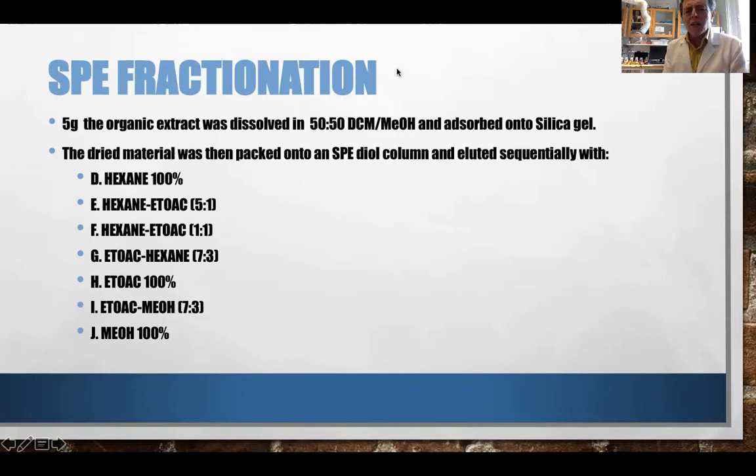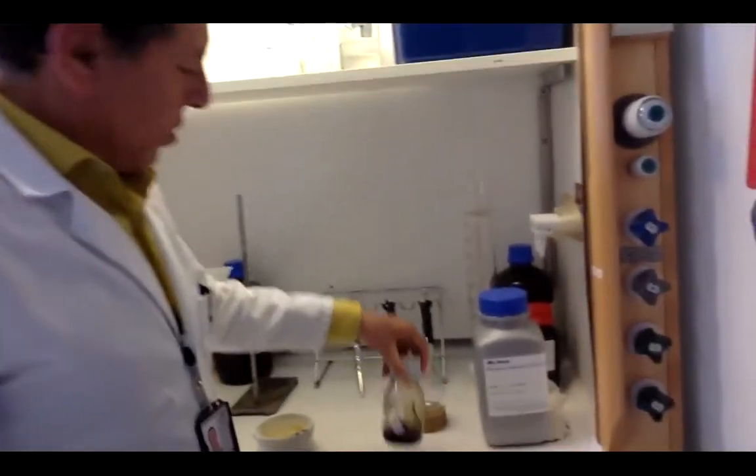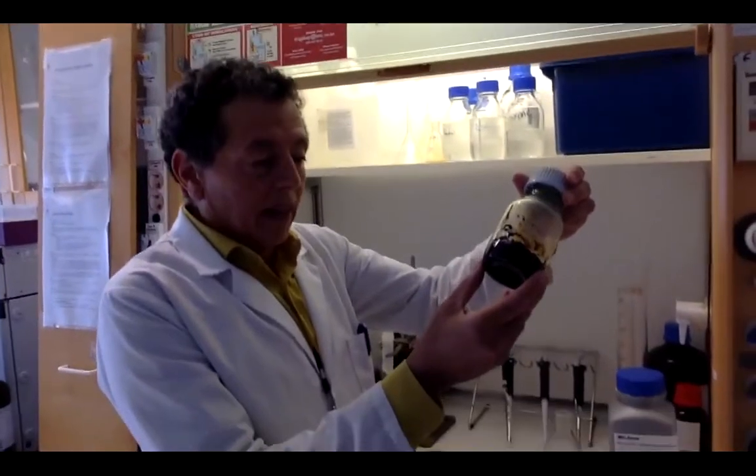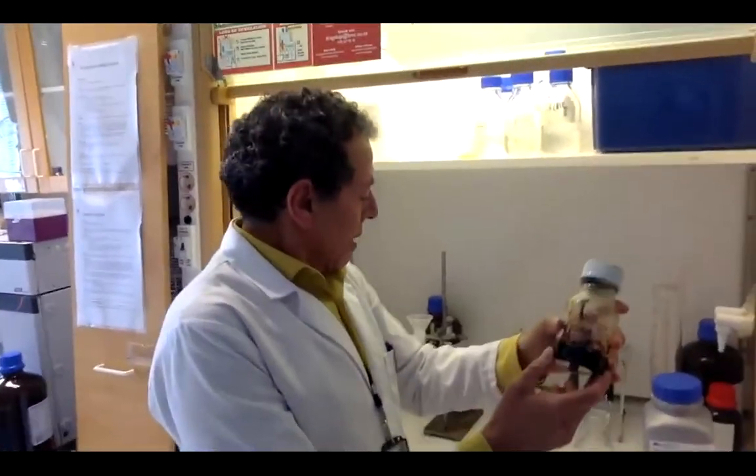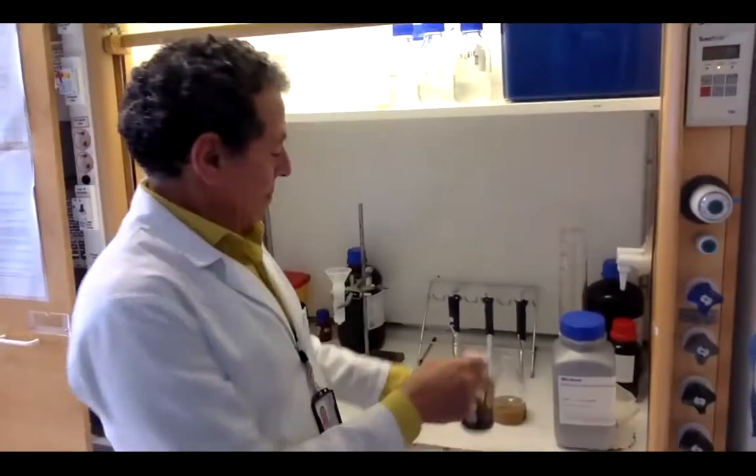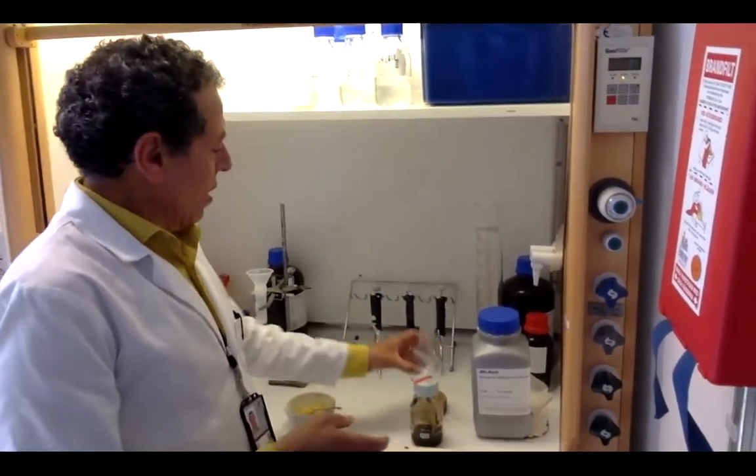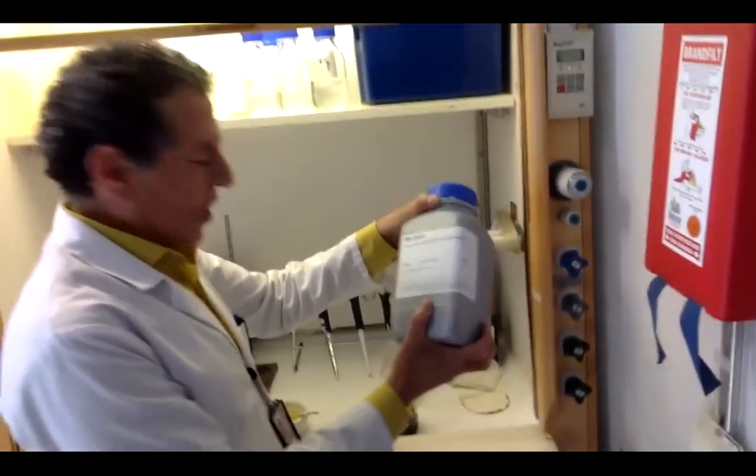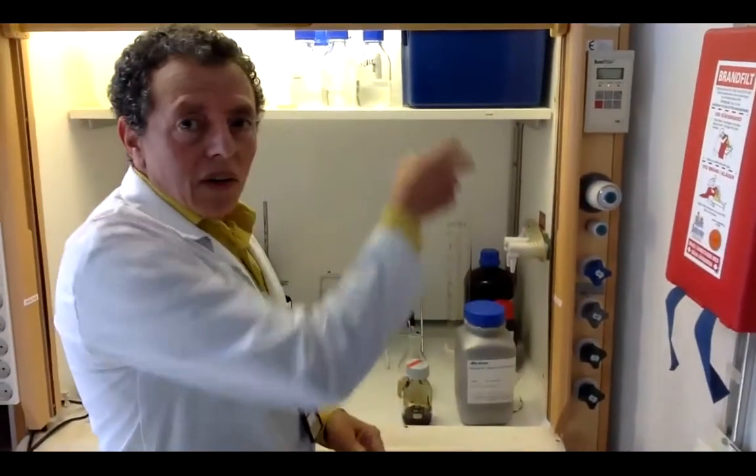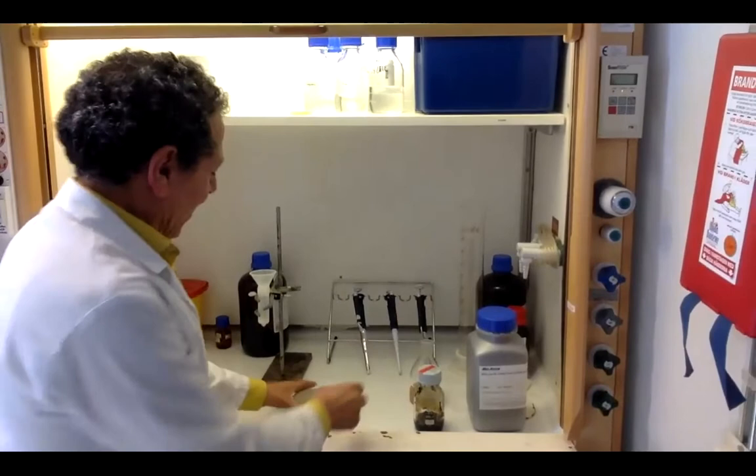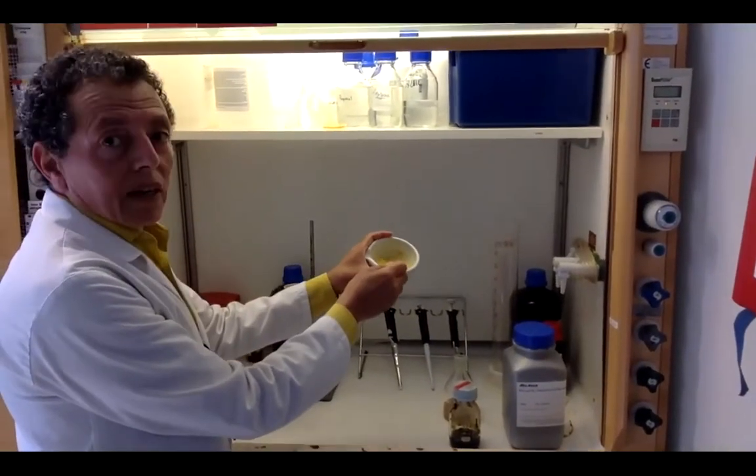Let us start the lab work, which I think will be very enjoyable. Here we have the organic extract, which in our case is DCM-methanol. We take 5 grams in a round-bottom flask, dissolve it in DCM-methanol, add 8 grams of silica gel, then use a rotary evaporator to get the dried material like this one.